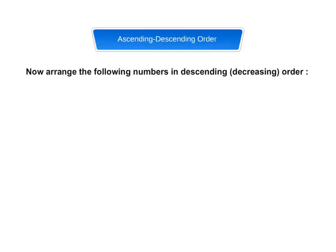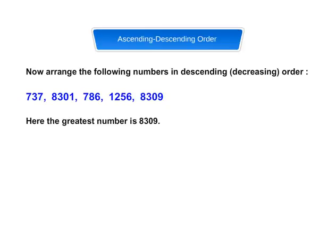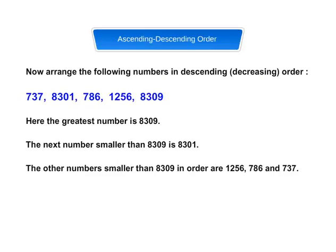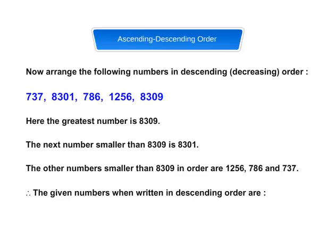Now, arrange the following numbers in descending or decreasing order: 737; 8,301; 786; 1,256; 8,309. Here, the greatest number is 8,309. The next number smaller than 8,309 is 8,301. The other numbers smaller than 8,309 in order are 1,256, 786, and 737. Therefore, the given numbers when written in descending order are: 8,309; 8,301; 1,256; 786; 737.